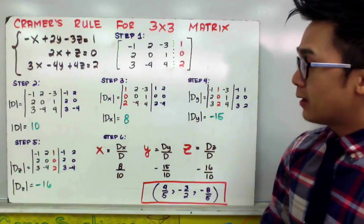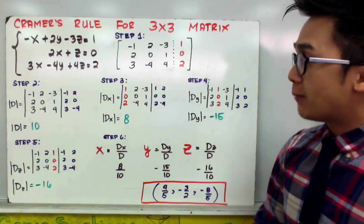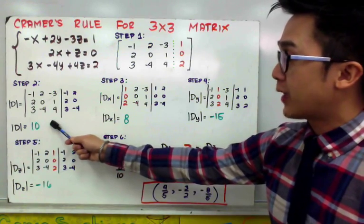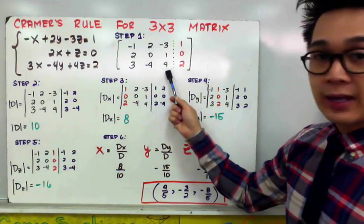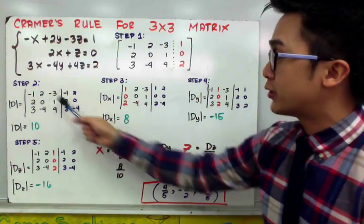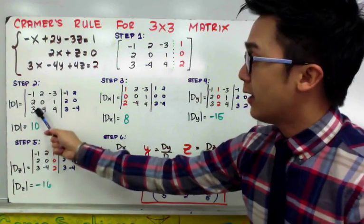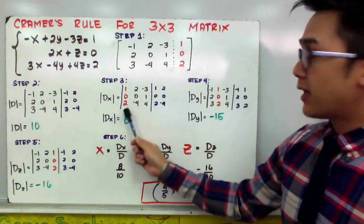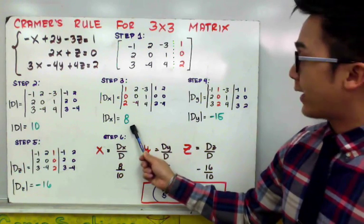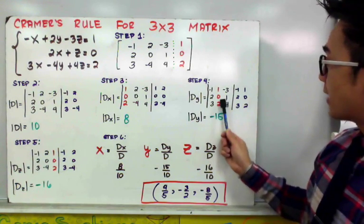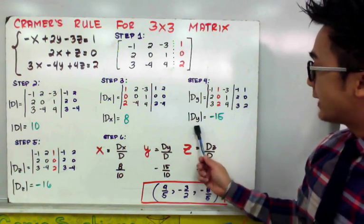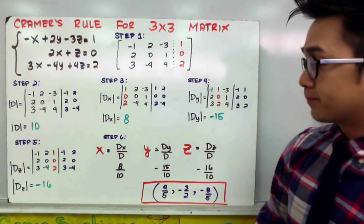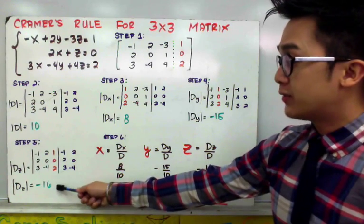You should already know how to find the determinant of a 3x3 matrix. The coefficient matrix has entries negative 1, 2, 3, 2, 0, negative 4, and negative 3, negative 1. Copy the first two columns and find the determinant by multiplying the first three diagonal groups and subtracting the next three diagonal groups, which gives D equals 10. For step 3, change the x column by the right-hand side 1, 0, 2, giving Dx equals 8. For step 4, change the second column by the right-hand side, giving Dy equals negative 15. For step 5, change the last column by the right-hand side, giving Dz equals negative 16.